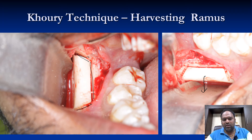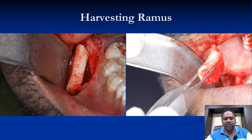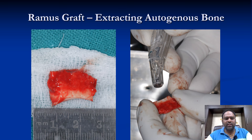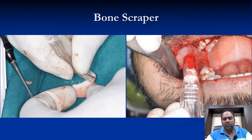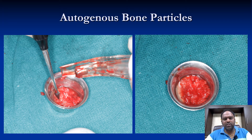We harvested the ramus graft — this is how the ramus bone looks. Then came the most annoying job, which I don't particularly like: scraping the cancellous bone. Once the cancellous bone was scraped, these are the autogenous bone particles, which we kept in IPRF prepared from the patient's blood.